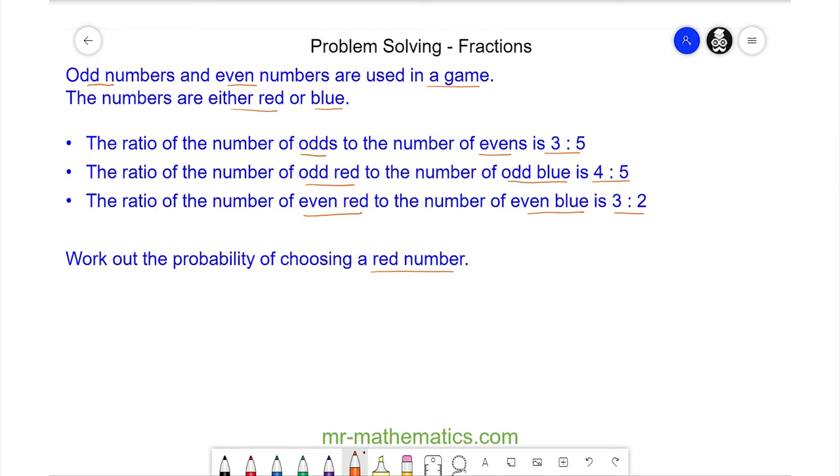I'm going to begin by writing each of these ratios as fractions. We have odd to evens which is 3 to 5, or as a fraction 3/8 to 5/8. Odd red to odd blue is 4 to 5, or 4/9 to 5/9. And even red to even blue is 3 to 2, or 3/5 to 2/5.